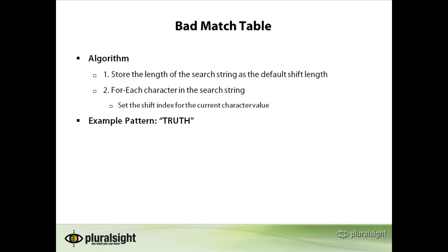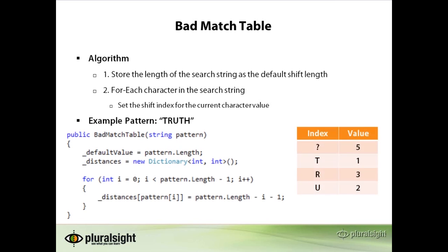Let's look at building the table for the example word 'truth'. First, we set the default value to the length of the pattern — in this case the length is 5. So looking at the table, we can see that any time we get an index that we don't recognize, represented by the question mark, we can skip the entire length of the string being found. Next, we allocate the dictionary that will hold the remainder of the table. And finally, we walk the string from left to right, and set the distance to skip to be the difference between the pattern length and the current index, minus 1.